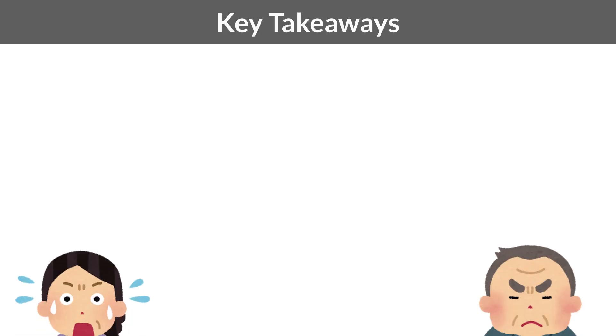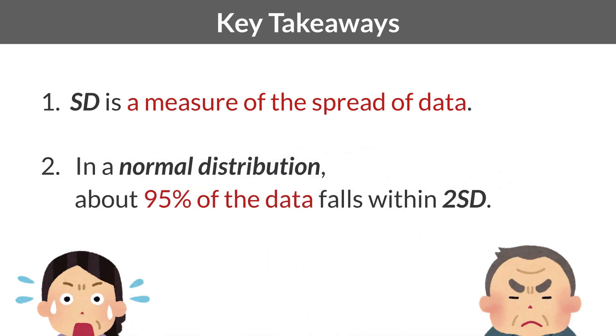Key Takeaways: Standard deviation is a measure of data spread. In a normal distribution, about 95% of data falls within two standard deviations. Remembering these two points is a good start.